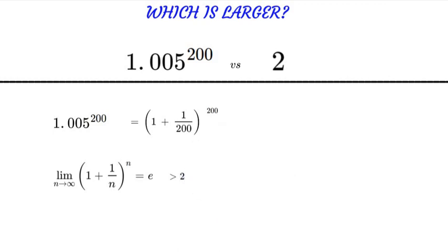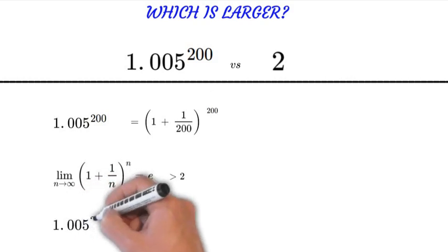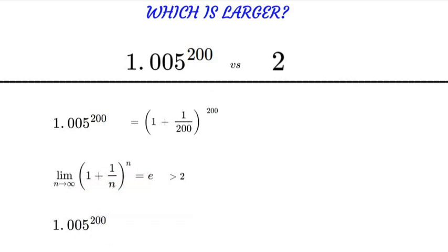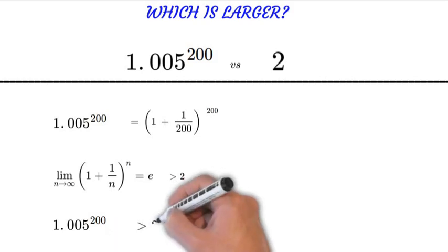2.7 is definitely greater than 2, which means that 1.005 to the 200th power is in fact greater than 2.